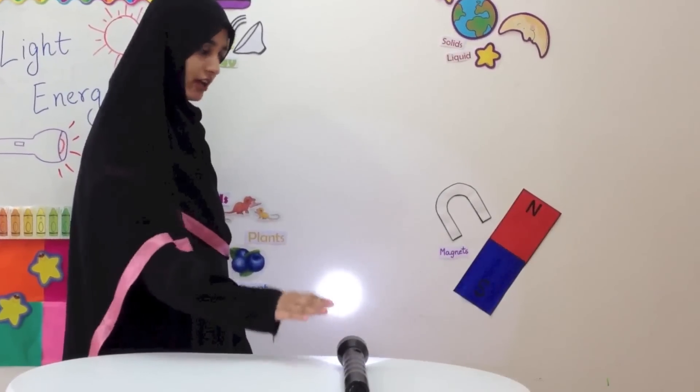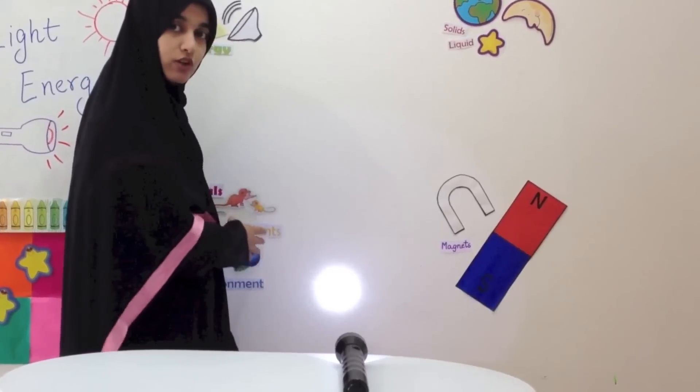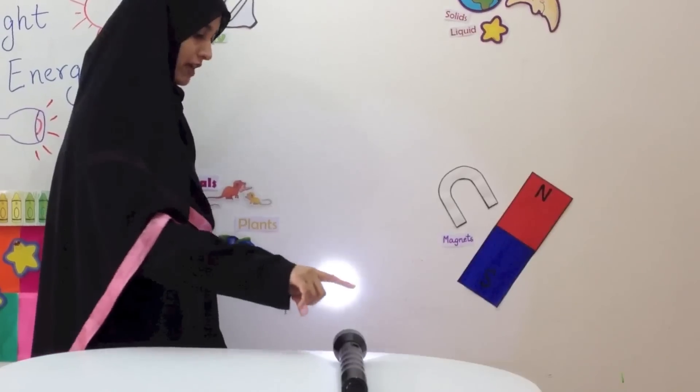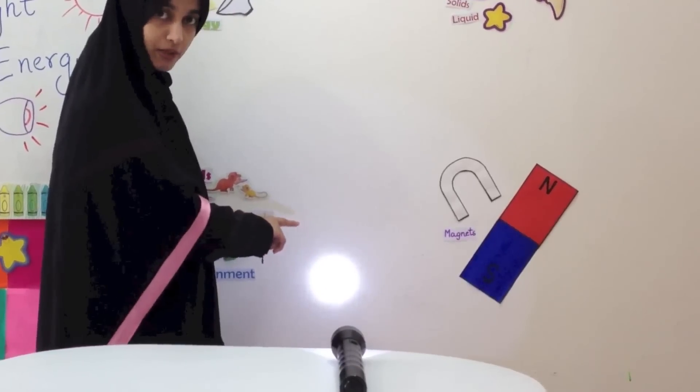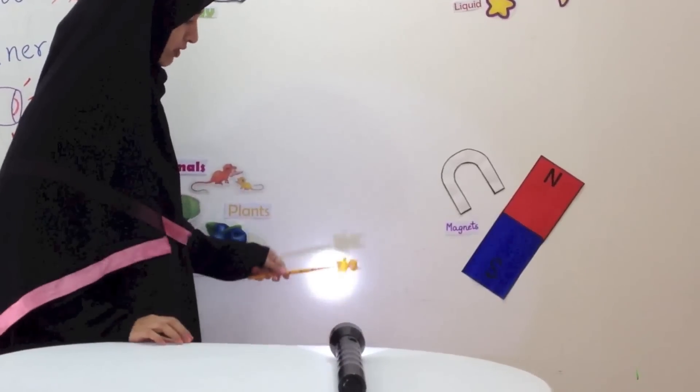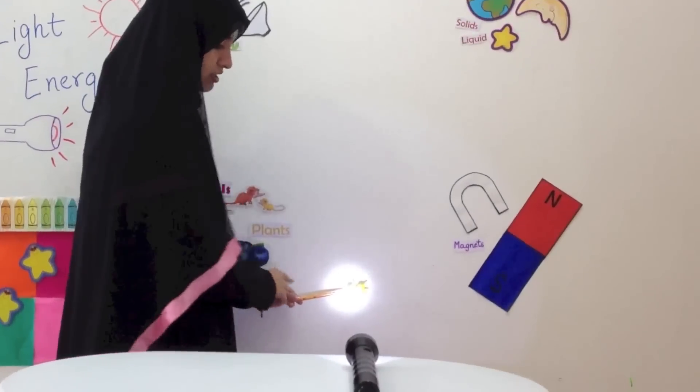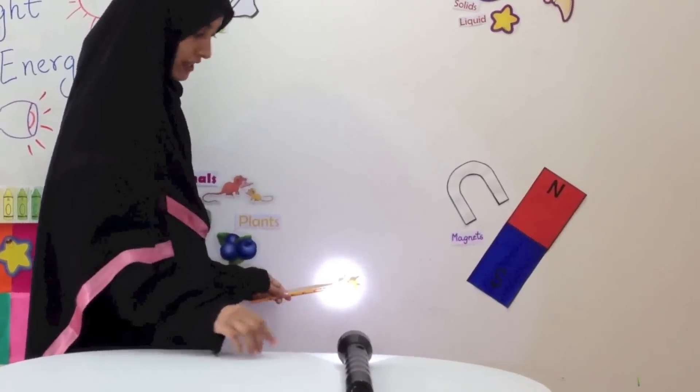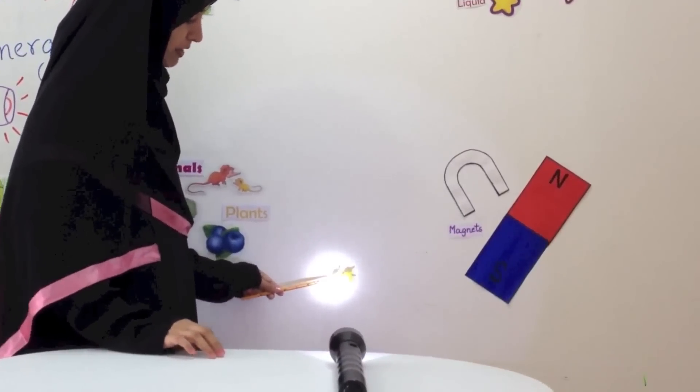Here I have a torch and you can see that the light is coming on the wall. Now, if I put an object in between this path, you will see a shadow forming on the wall. If I bring the object near to the light or the source of light, the shadow is going to grow bigger.